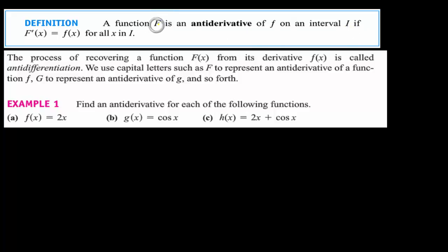Basically, what you're given is finding out what was the original function that we took its derivative and got little f. That's the process of recovering a function capital F of x from its derivative little f, and that's what you call anti-differentiation. We use capital F to represent the antiderivative of little f, capital G for little g, and so on.